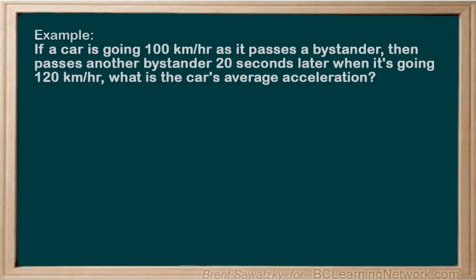For example: a car passes a bystander going 100 kilometers per hour, and 20 seconds later it passes another bystander but this time going 120 kilometers per hour. What was the average acceleration?